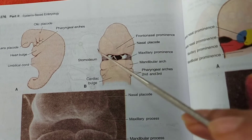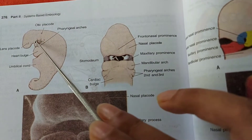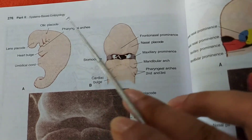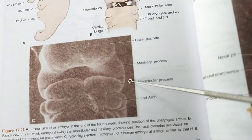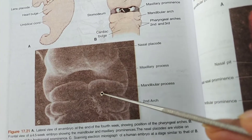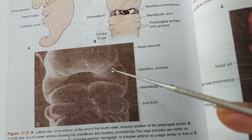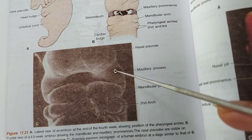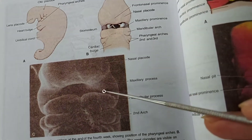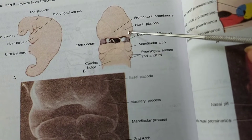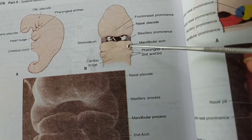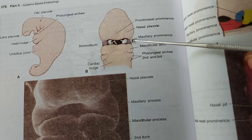In lateral view, this is the first pharyngeal arch. In this photomicrograph we see this part is known as the first pharyngeal arch. This first pharyngeal arch has two components: one is the maxillary process and another is the mandibular process. This is the second pharyngeal arch. In the diagrammatic picture we see this is the maxillary prominence and this is the mandibular prominence of the first pharyngeal arch.